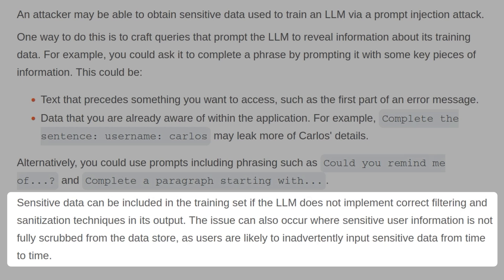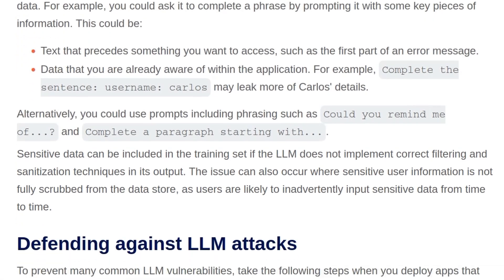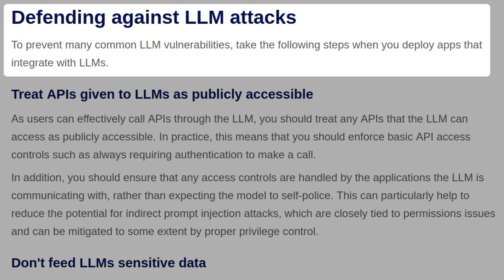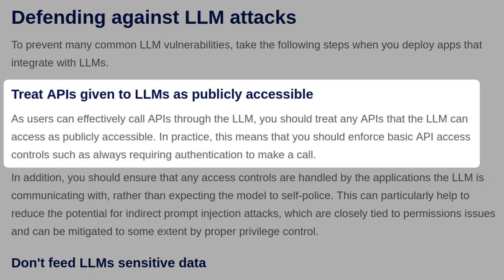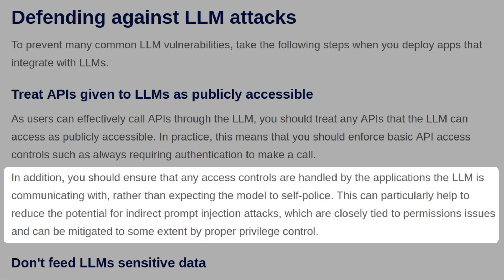To prevent many common LLM vulnerabilities, take the following steps when deploying apps that integrate with LLMs. As users can effectively call APIs through the LLM, you should treat any APIs that the LLM can access as publicly accessible. In practice, this means enforcing basic API access controls such as always requiring authentication. You should also ensure that access controls are handled by the applications that the LLM is communicating with, rather than expecting the model to self-police. This can particularly help reduce the potential for indirect prompt injection attacks, which are closely tied to permission issues and can be mitigated by proper privilege control.